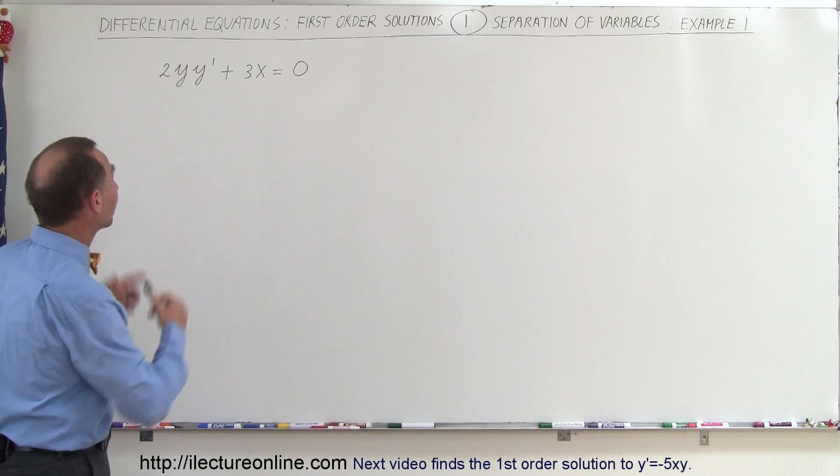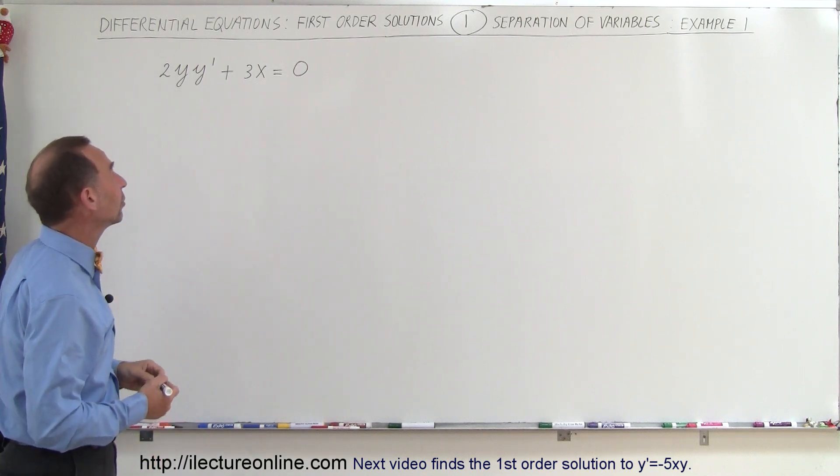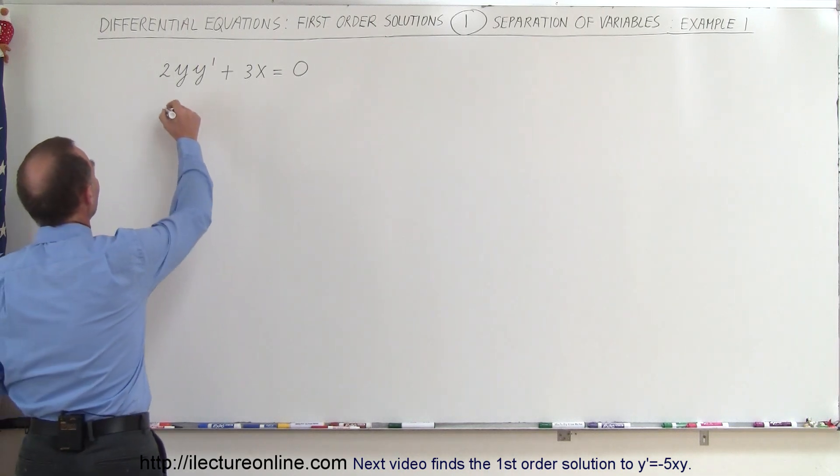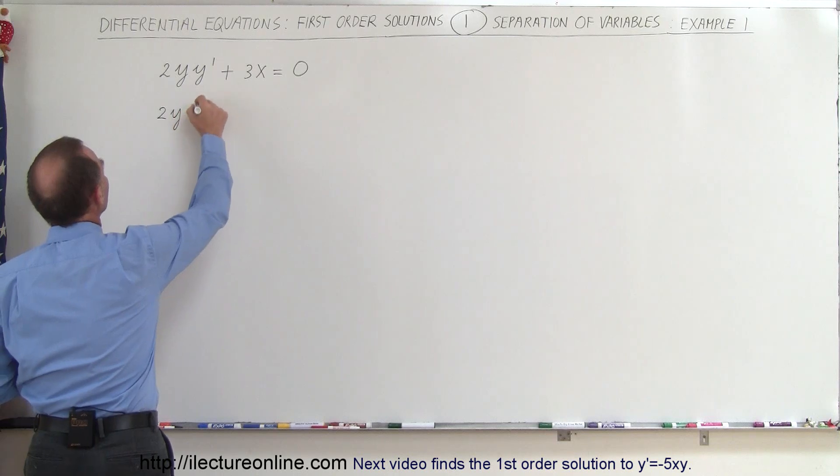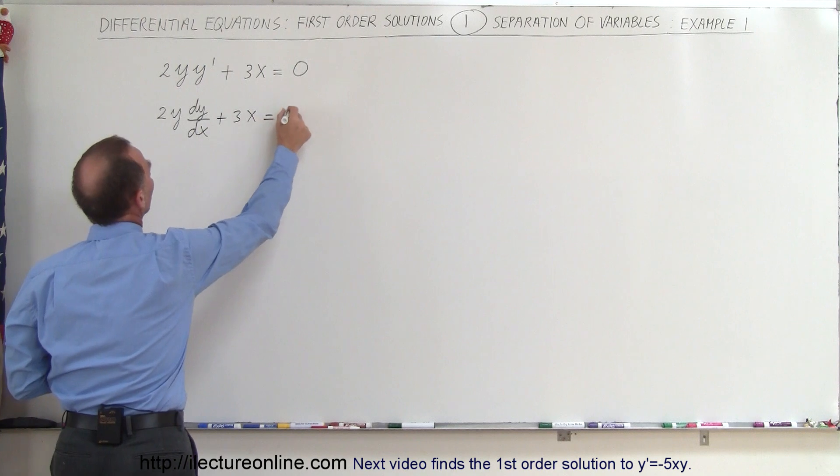So starting out with a very straightforward equation, here is 2y y' plus 3x equals 0. Again, y' means dy/dx, so we can rewrite that as 2y dy/dx plus 3x equals 0.